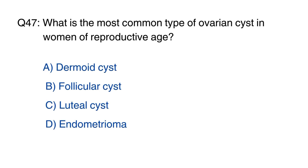Question 47: What is the most common type of ovarian cyst in women of reproductive age? The right option is option B, follicular cysts.